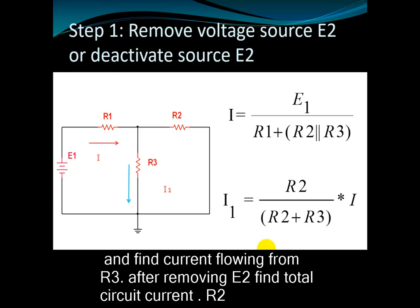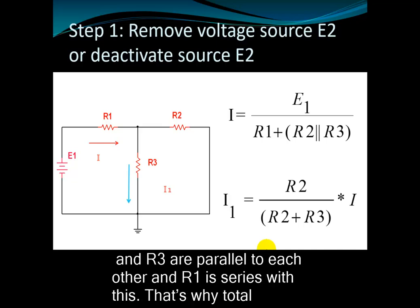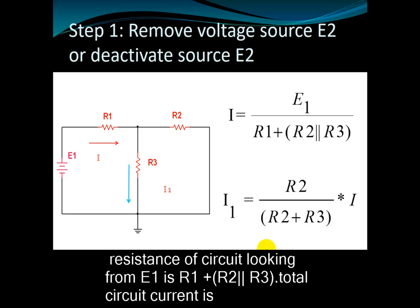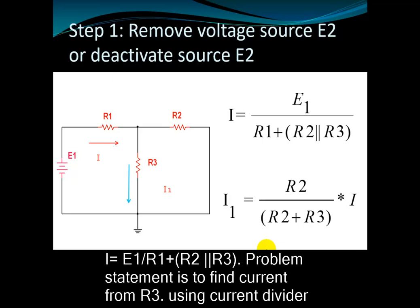As already explained, the first step is to remove or deactivate one voltage source and find the current flowing through R3. After removing E2, find the total circuit current. R2 and R3 are parallel to each other, and R1 is in series with this combination. That's why the total resistance of the circuit looking from E1 is R1 plus R2 parallel R3. Total circuit current I is equal to E1 divided by R1 plus R2 parallel R3.